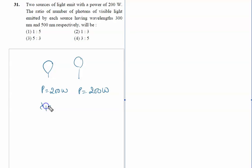The wavelength λ1 is 300 nanometers, or 300 × 10^-9 meters, and wavelength λ2 is 500 nanometers, or 500 × 10^-9 meters.